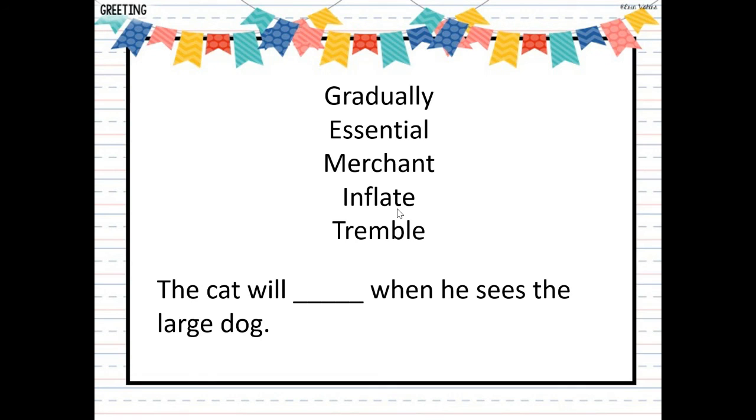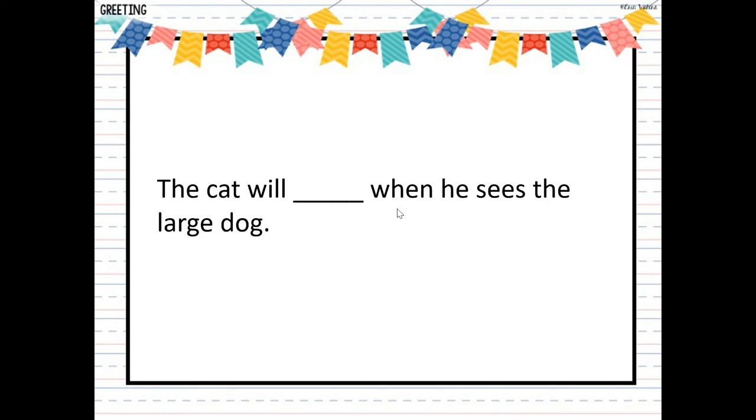The cat will blank when he sees the large dog. Which word would go in the blank? The cat will blank when he sees the large dog. You should say the cat will tremble when he sees the large dog.